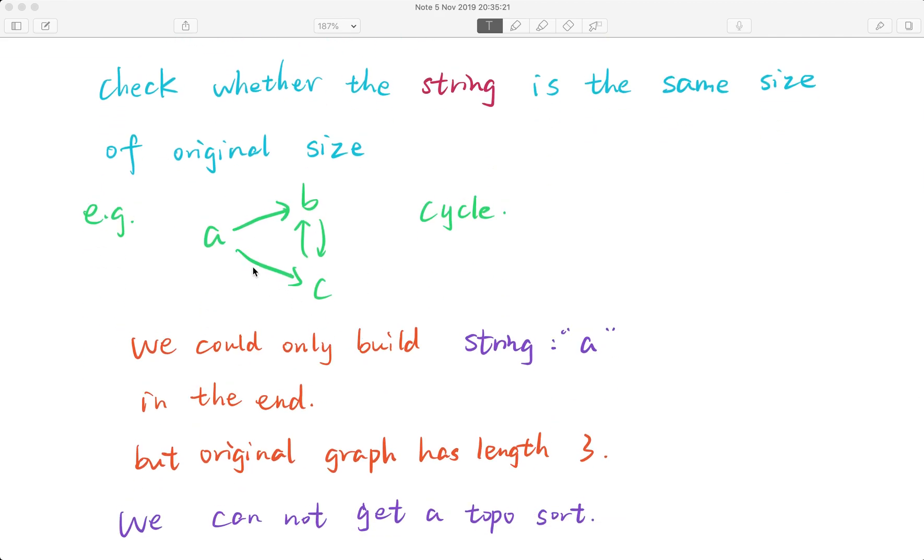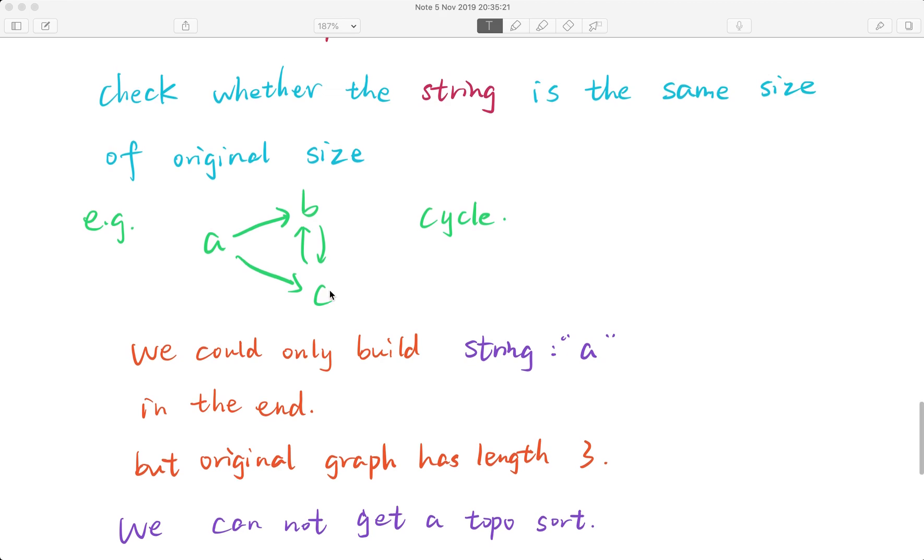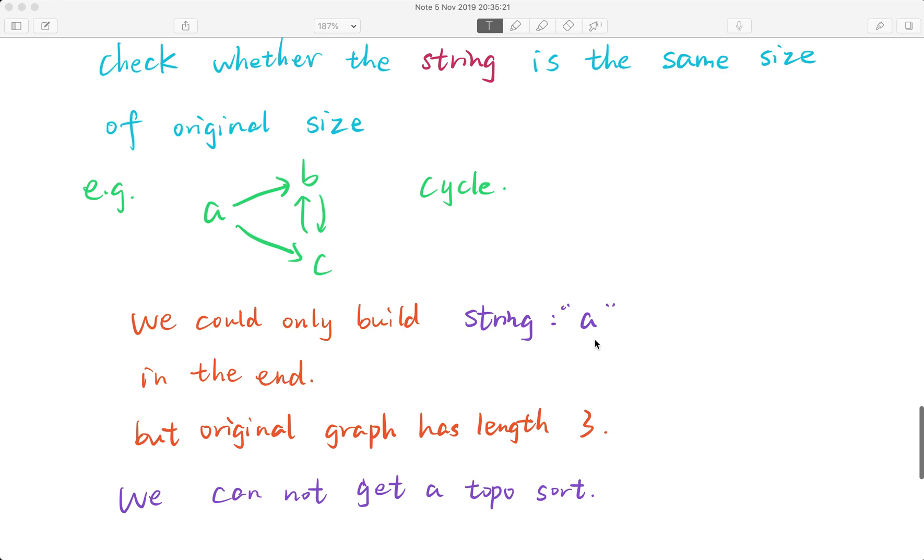For this example, at first a has in-degree 0, we can offer a into the queue. But next we will see b has in-degree 2 and c also has in-degree 2. They will not be offered into the queue. So we can only generate a, but originally the size of this graph is 3, so they are not equal. We cannot get a valid topological sorting.